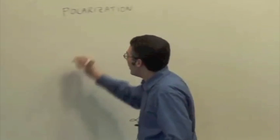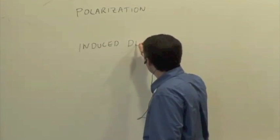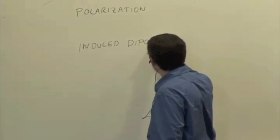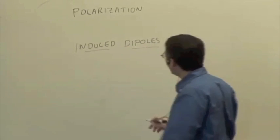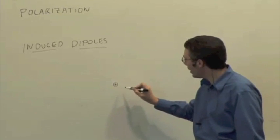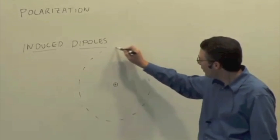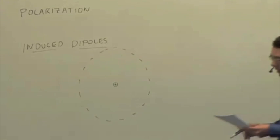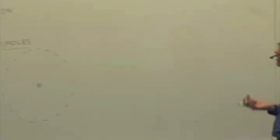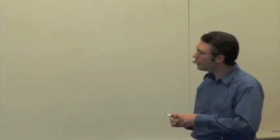We talked about induced dipoles, where if you have an atom with a neutral atom with a positively charged nucleus and a negatively charged electron cloud surrounding the nucleus, and if you apply an electric field. So if you bring a positively charged object or a negatively charged object nearby, it's going to apply an electric field.